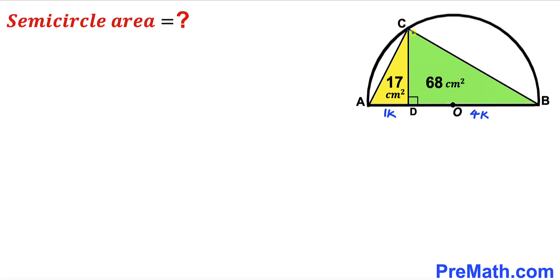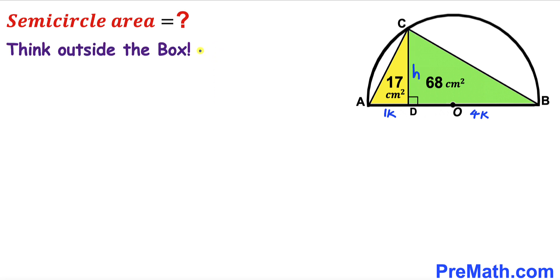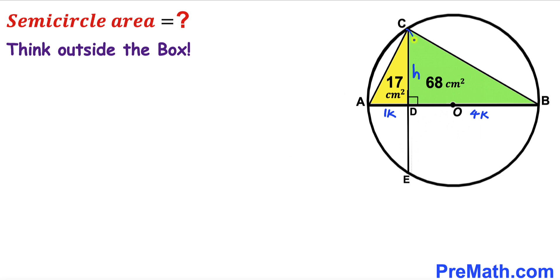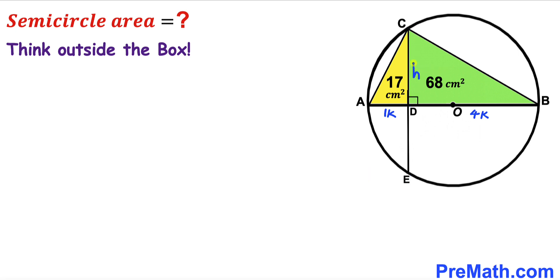Let the height CD = h. Now, thinking outside the box, we consider the whole circle by extending CD all the way to point E on the other side. By symmetry, the extended segment DE equals h as well, so the full chord segment from D measures h on each side.